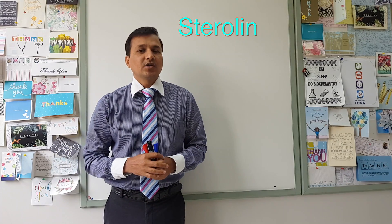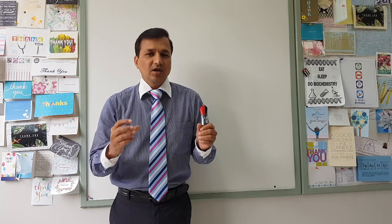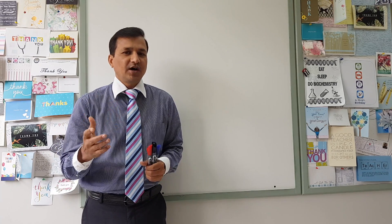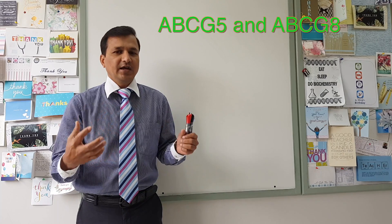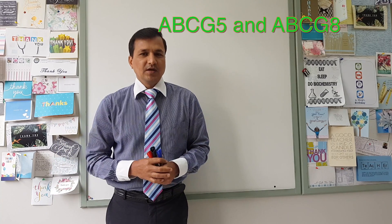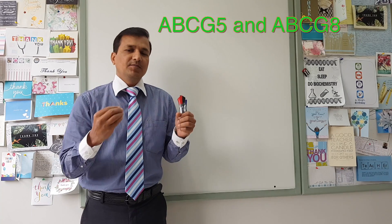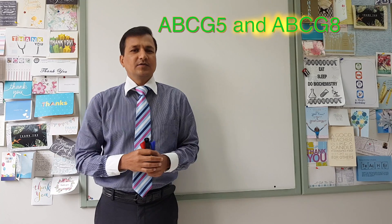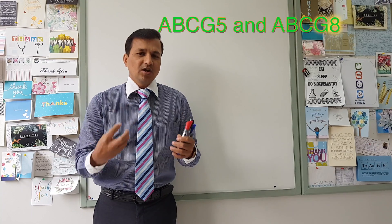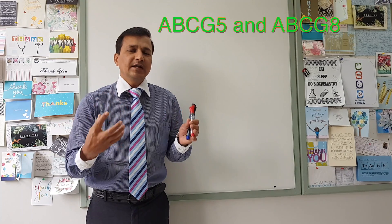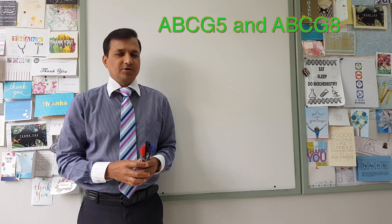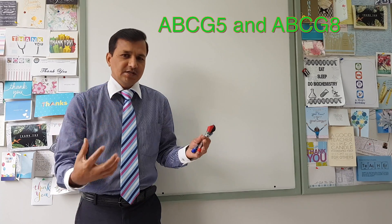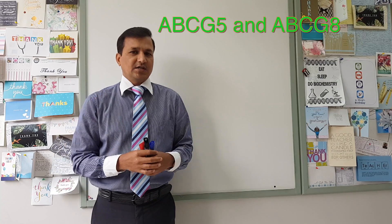Now what kind of genes are coding for a protein called sterolin? Sterolin is coded by two genes which are referred to as ABCG5 and ABCG8 genes. These ABCG5 and ABCG8 genes code for the sterolin transporter, which is an ATP binding cassette transporter — that is why we refer to it as the ABCG5 and ABCG8 transporter.